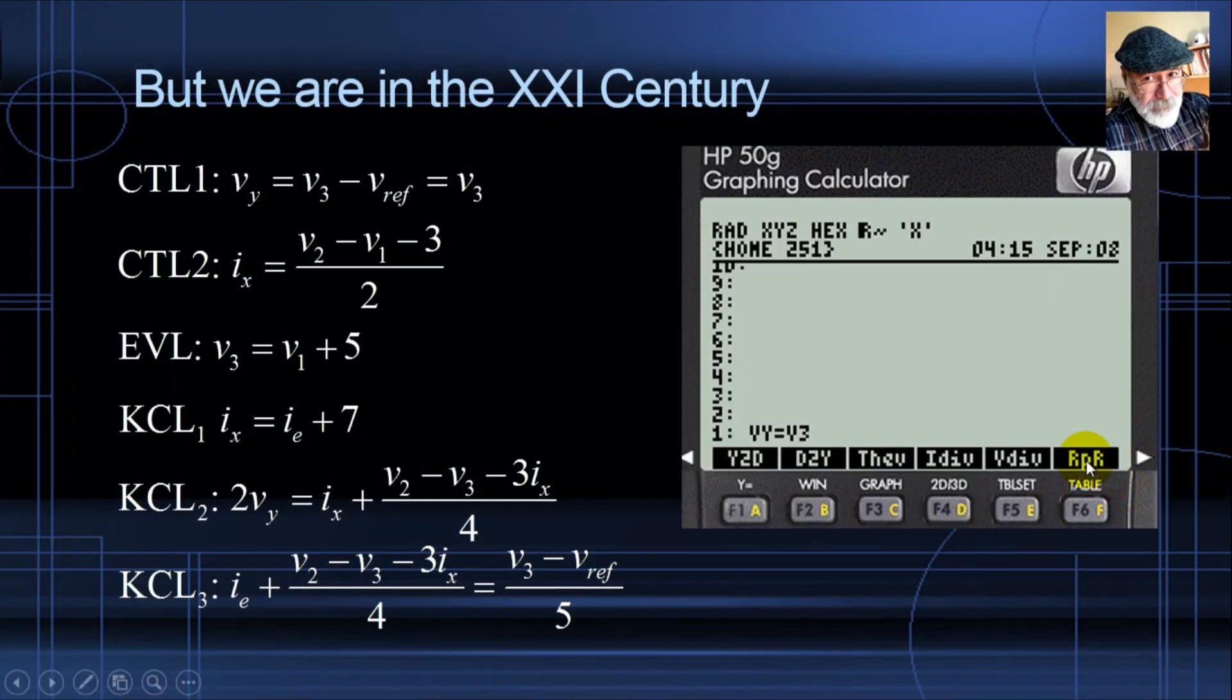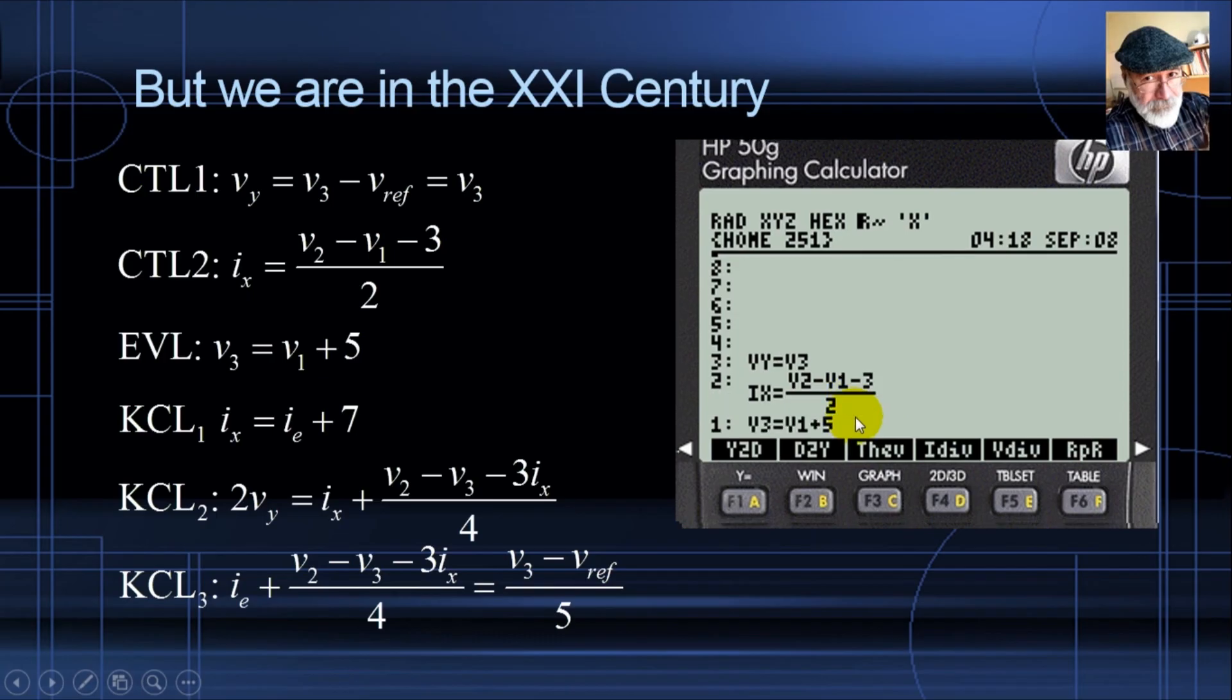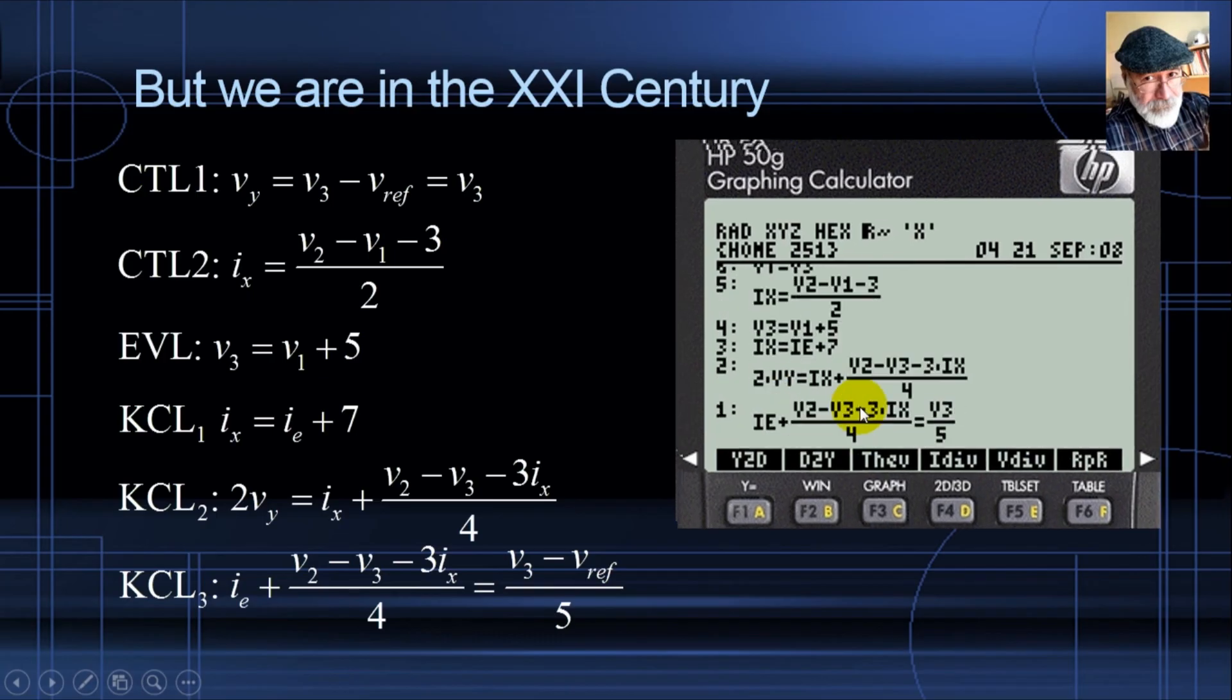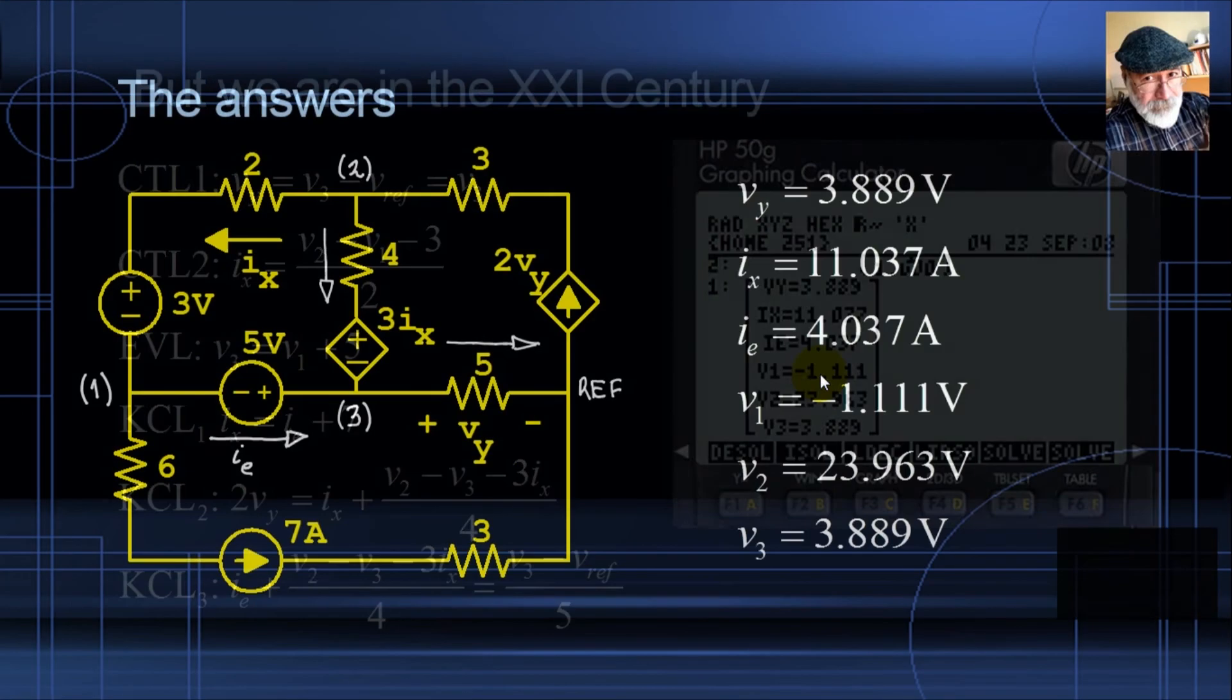But if you're in my class, you already have it. So that's how we're going to solve that system of equations. We enter the equations, and if you don't know how to do that, go to the other playlist in this very same channel, the one on HP50G that teaches you from how to set up the calculator all the way into using the calculator for solving Laplace transform problems and plotting that and whatnot. But right now, we want to enter those equations. So the equations are Vy is V3, Ix is V2 minus V1 minus 3 over 2, etc., we enter all of those equations, and we ask the calculator to solve for it, and we have the values for all the six unknowns.